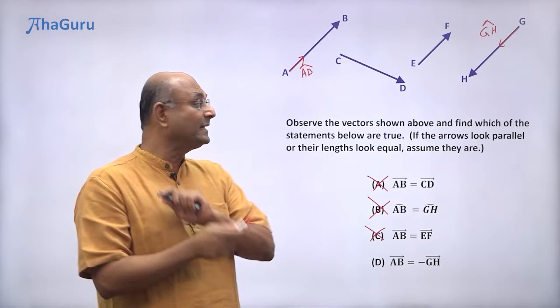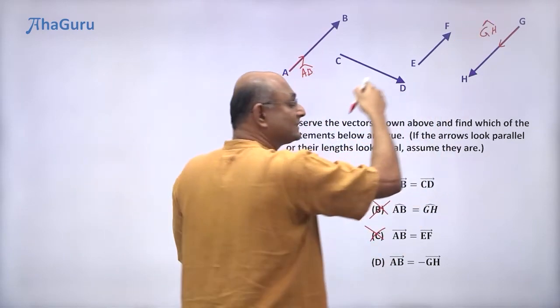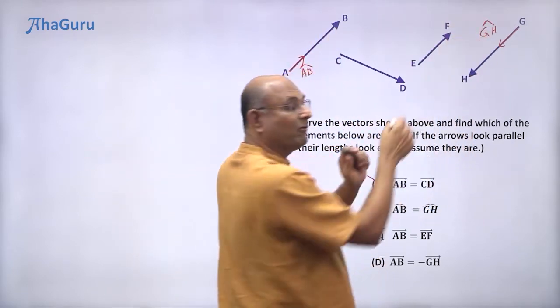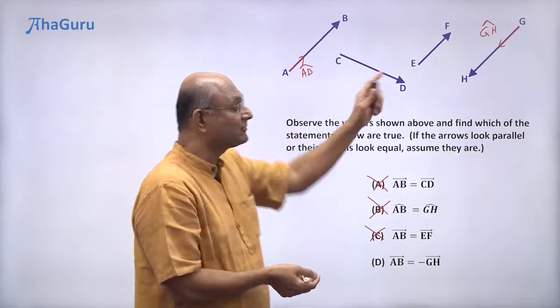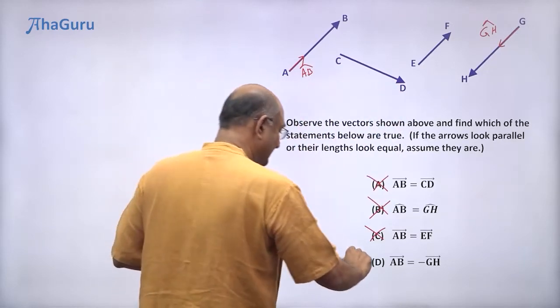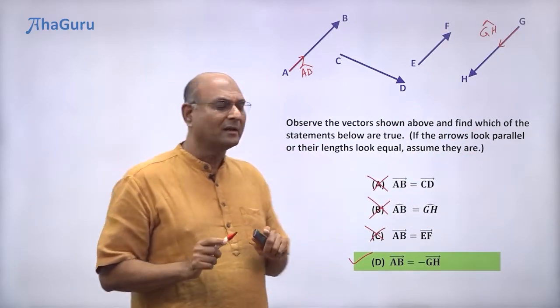AB vector is equal to minus GH. You can see that this and this have opposite directions and they have the same length. So AB vector is equal to minus GH vector. Yes, that statement is correct. So option D is the correct answer.